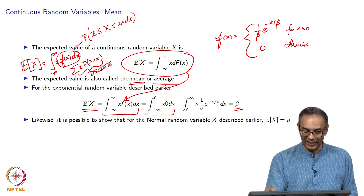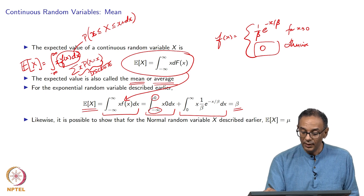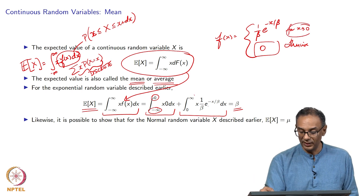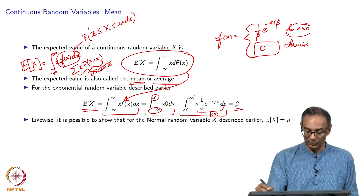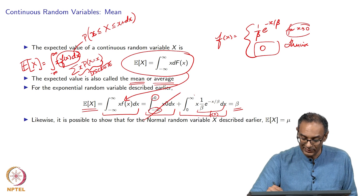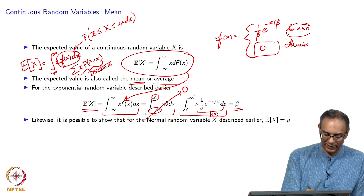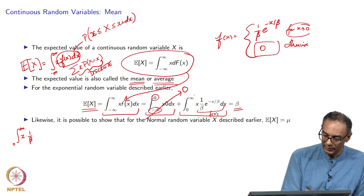I split the integral into two parts. The first part is the integral from negative infinity to 0 of x times 0 times dx, and then plus the integral from 0 to infinity of x times little f of x dx. We want to show this result equals beta. The first part is 0 because it is x times 0, so that goes away.